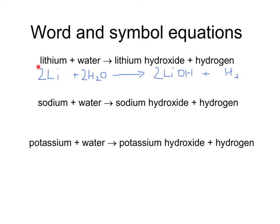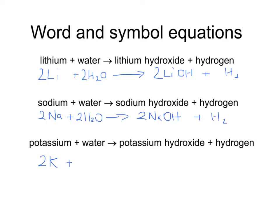Let's check: on the left we've got two lithiums; on the right, two lithiums. On the left we've got two times two equals four hydrogens; on the right, two times one is two, plus two, equals four hydrogens. And we've got two oxygens and two oxygens. It now balances. The others have very similar symbol equations. For sodium: 2Na + 2H₂O → 2NaOH + H₂. And for potassium: 2K + 2H₂O → 2KOH + H₂.